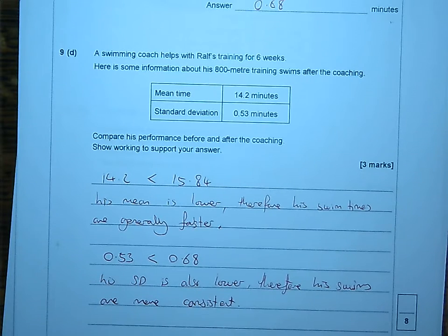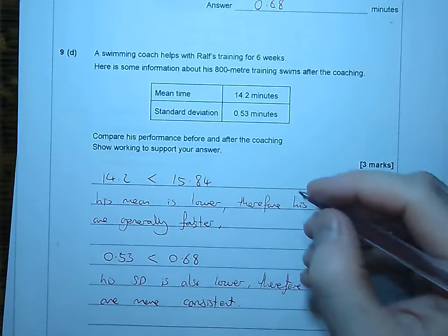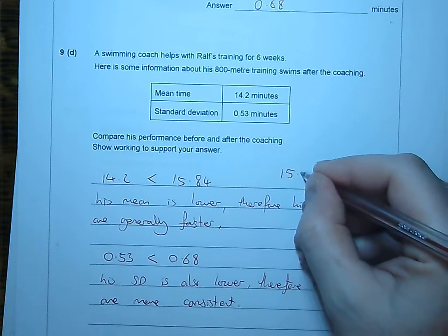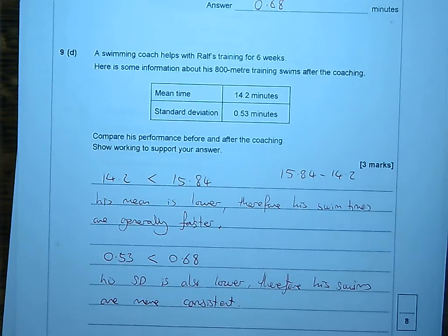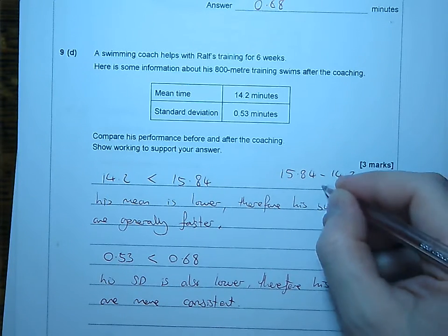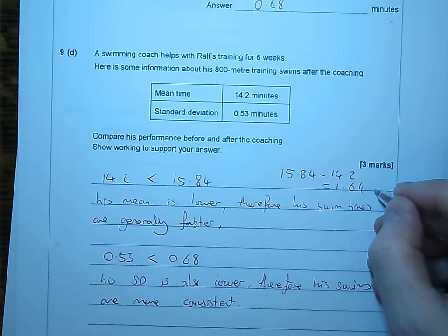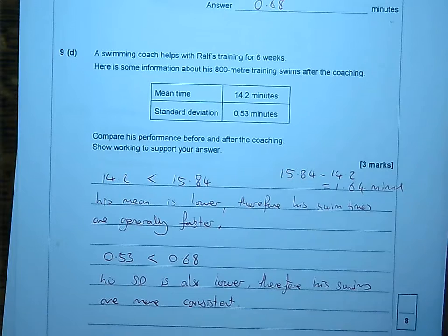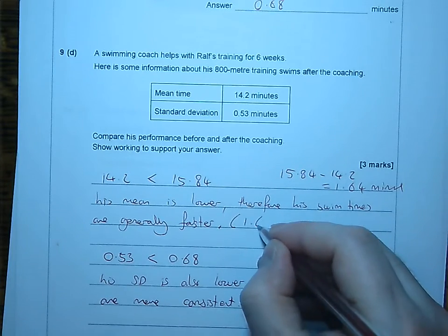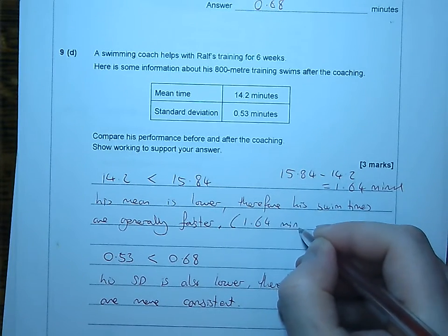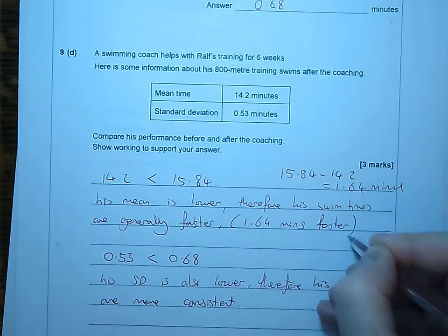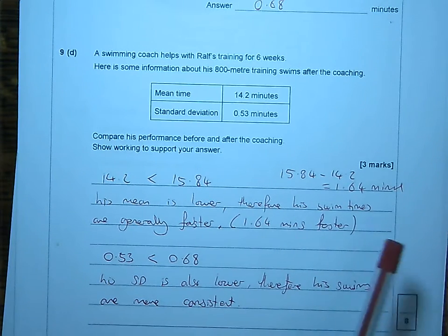The only calculation I think we could add into this, is how much faster. So, let's do 15.84 minus 14.2, and that's going to give us what? 1.64. 1.64 minutes. 1.64 minutes faster. We could change that into seconds, but since he didn't for his table, I don't think we will either. 1.64 minutes faster. Job done.